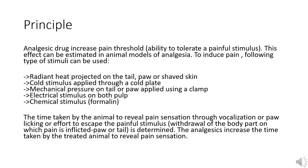To induce pain, the following types of stimuli can be used: (1) radiant heat projected on the tail or shaved skin, (2) cold stimulus applied through a cold plate, (3) mechanical pressure on tail or paw applied using a clamp, (4) electrical stimulus on both pulp, and (5) chemical stimulus.